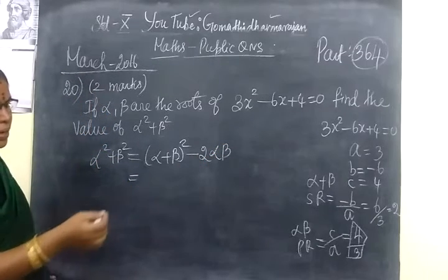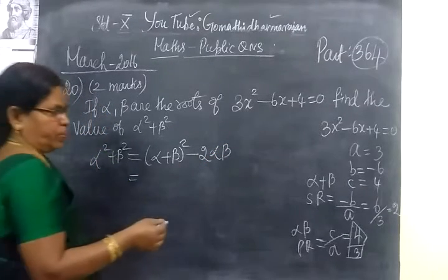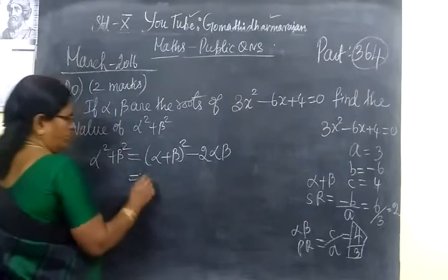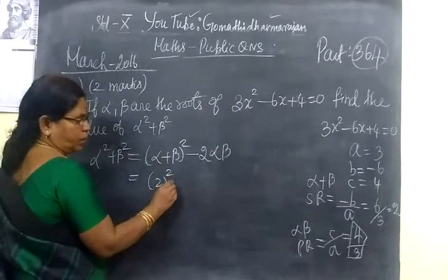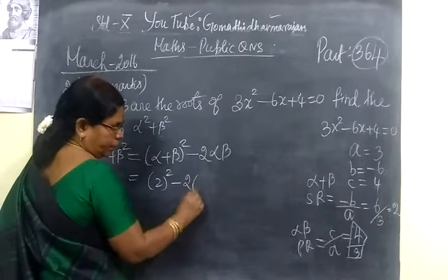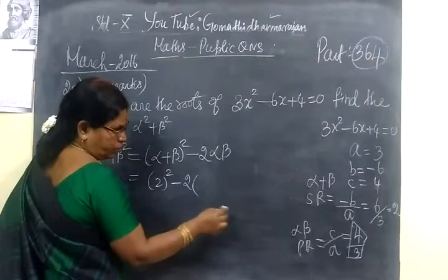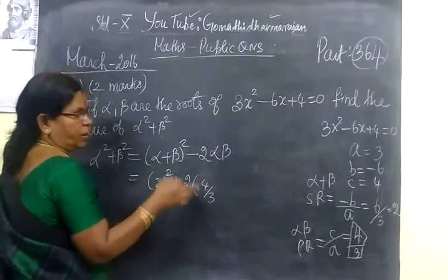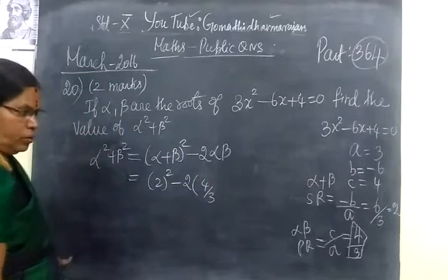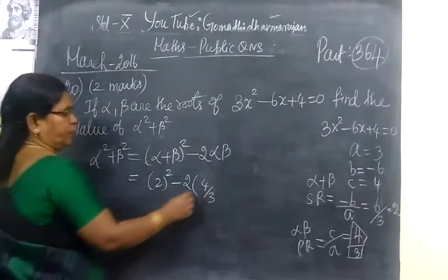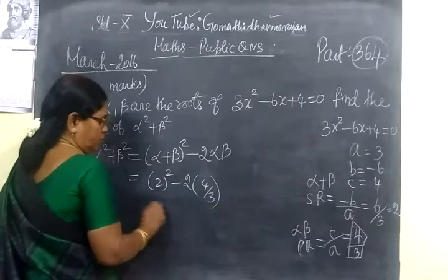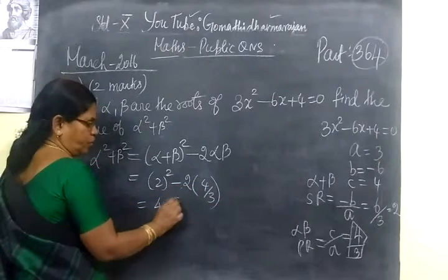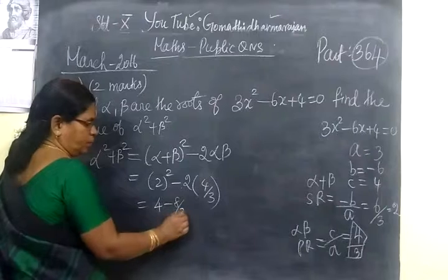Alpha plus beta equal to 2. So, you can just write 2 square minus 2 bracket alpha beta value, 4 by 3. Because C value is 4, A value is 3, C by A. This is equal to 4 minus 2 times 4 by 3, which gives 8 by 3.